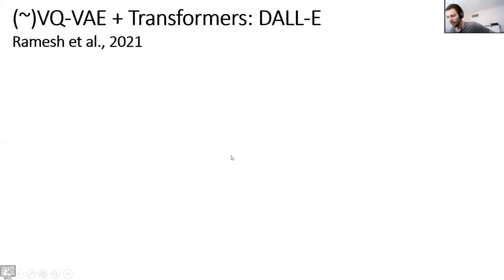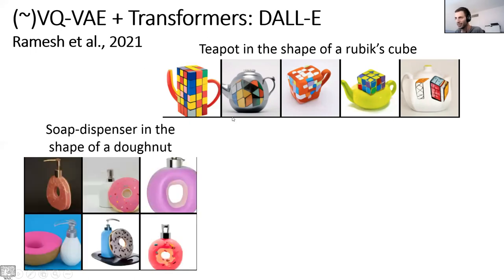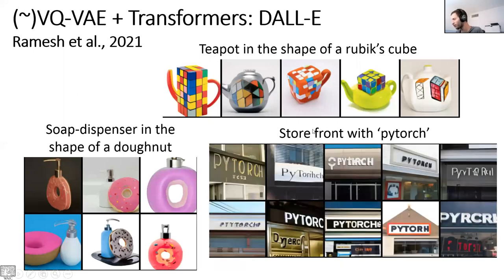As a teaser, there's recent work called DALL-E that combines the ideas of VQVAE (approximately) with transformers to combine language with images. The general idea is transformers taking a sentence as input and outputting the quantized vectors of the VQVAE. This allows generating images from text prompts like 'teapot in the shape of a Rubik's cube,' 'soap dispenser in the shape of a donut,' or 'storefront with PyTorch.' These are all generated images and the results are very impressive.